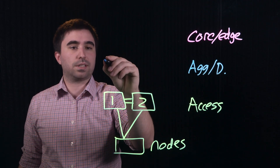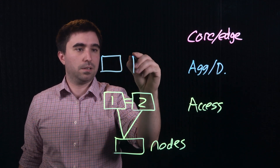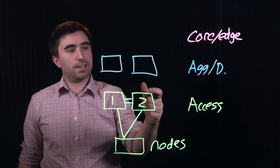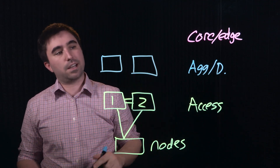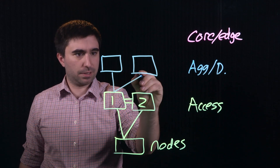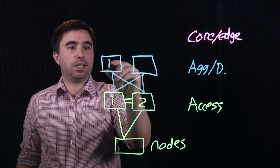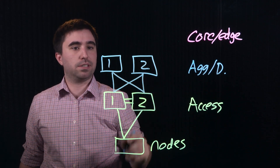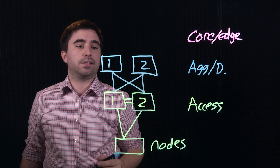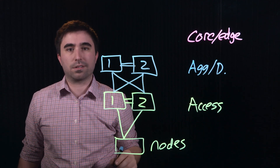To get towards the outside world, the access layer connects to the aggregation or distribution layer. Much like the nodes connect to the access layer, the access layer connects to the aggregation layer in a redundant manner, typically configured like this. And just like the access layer, we've got two switches here — aggregation switch one and aggregation switch two — and these are also almost always connected to each other like this.